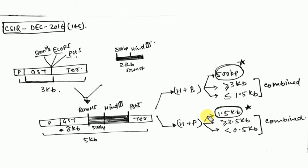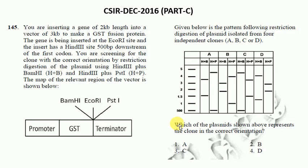When you do PST1 and HIN3, you will get a 1.5KB sure-shot fragment. So you will get this band in your options. In H plus B you get 500 base pairs, and in H plus PST1 you get 1.5KB. Which option would be this? Option C. So this is the answer for that particular question.